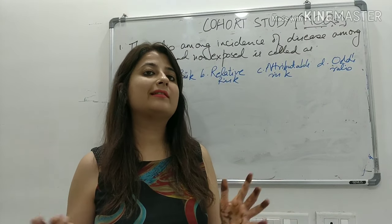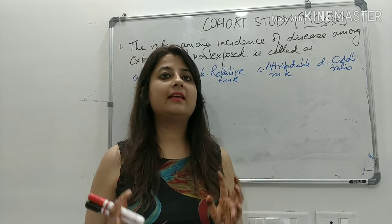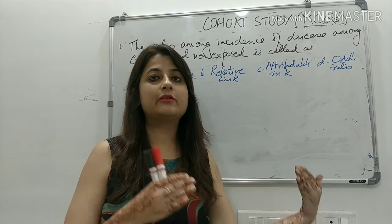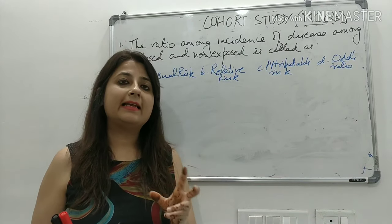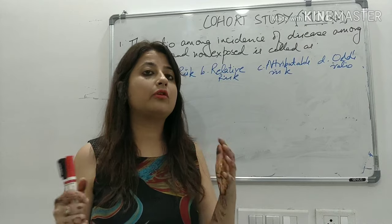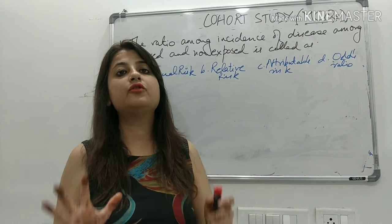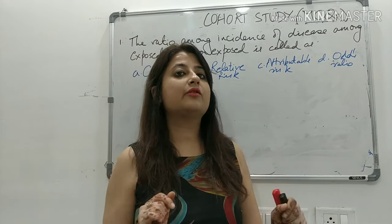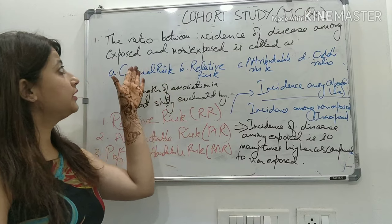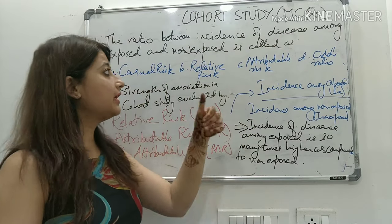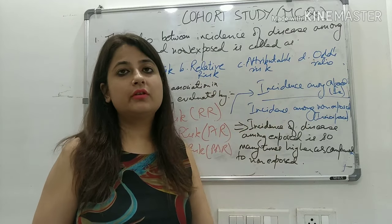The most important part of cohort study that is left is the strength of association. Cohort study tells you about an association between an exposure and an outcome — for example, if people are smoking, there is a chance of developing lung cancer. An MCQ to understand this: the ratio between incidence of disease among exposed and non-exposed is called relative risk, attributable risk, or odds ratio?